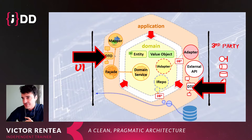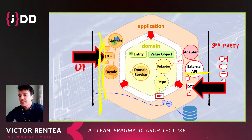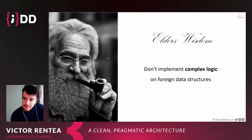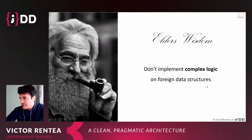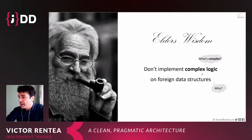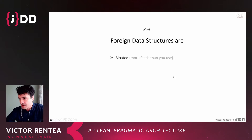DTOs are data structures that we can receive in our API or consume from systems we talk to. You shouldn't implement complex logic on foreign data structures. This took us years to realize. I see people writing heavy logic on DTOs they receive from clients or expose in their APIs. So what is complex logic, and what does 'foreign' mean?